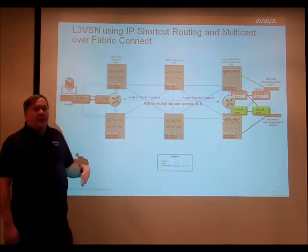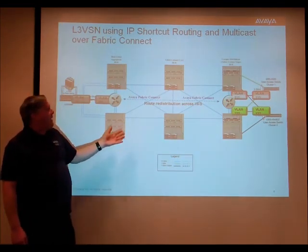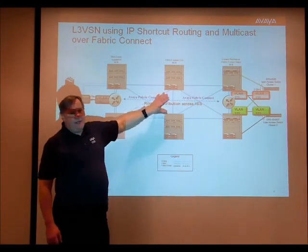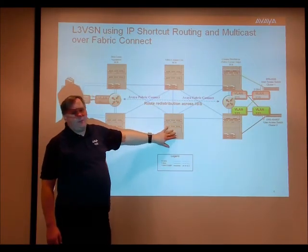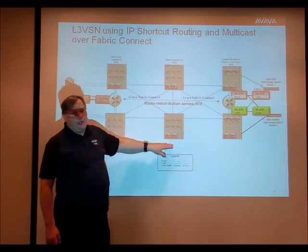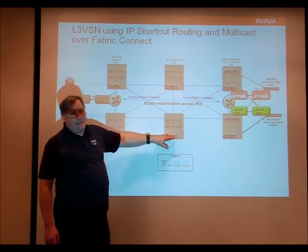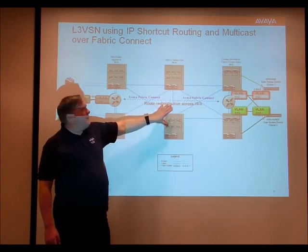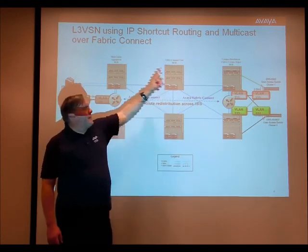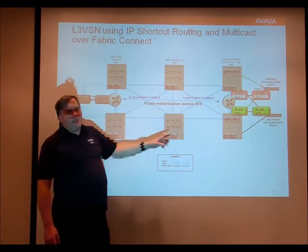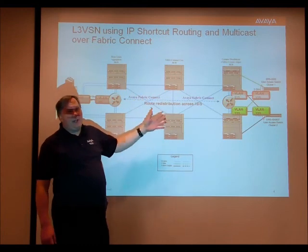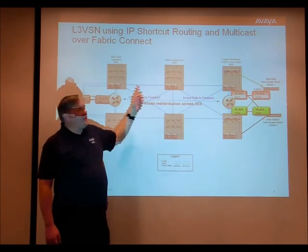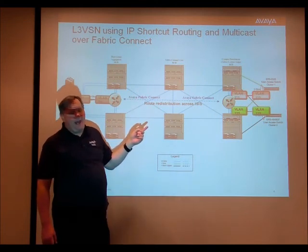Another nice feature of the Avaya Fabric Connect technology is once the core is set up, if you're not using it as an edge bridge connecting user buildings or user access devices, you never have to touch them again. The core of the network, once configured, will dynamically learn from the edge bridges what VLANs are out there, what ISIDs exist in the network, and it will just pass the traffic to those endpoints if they're on the shortest path.